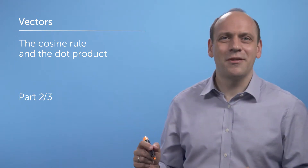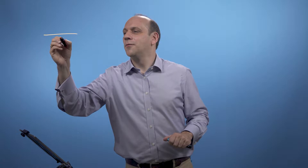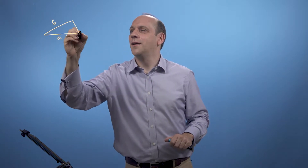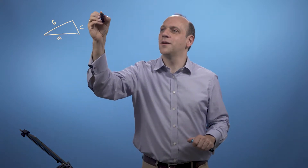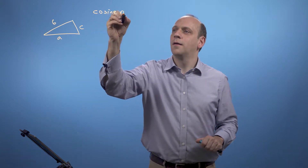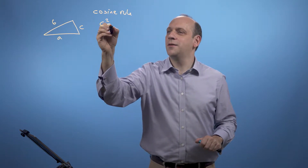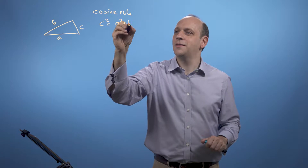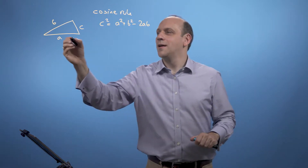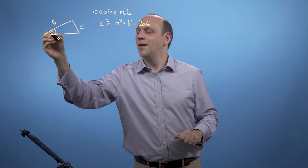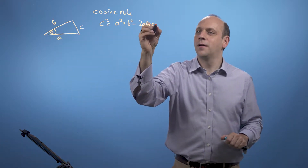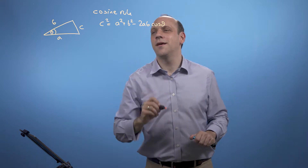Let's take the cosine rule from algebra, which you'll remember probably vaguely from school. That said, if we had a triangle with sides a, b, and c, then what the cosine rule said was that c squared was equal to a squared plus b squared minus 2ab times the cosine of the angle between a and b, cos of that angle theta.